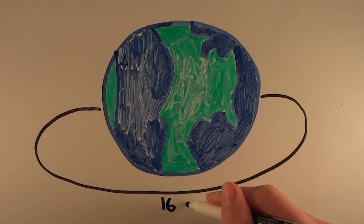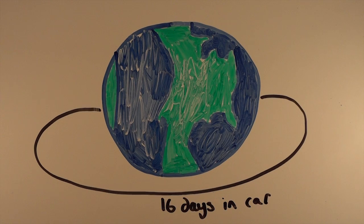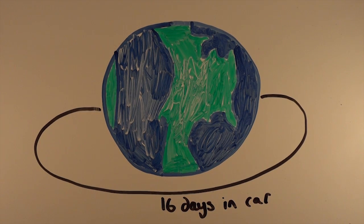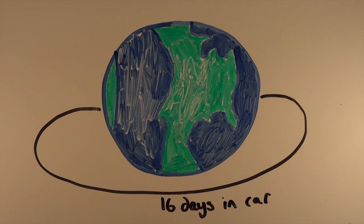We all know Earth is pretty big. It would take you 16 days, 16 hours and 45 minutes to drive around Earth in a car going 100 kilometers per hour constantly.